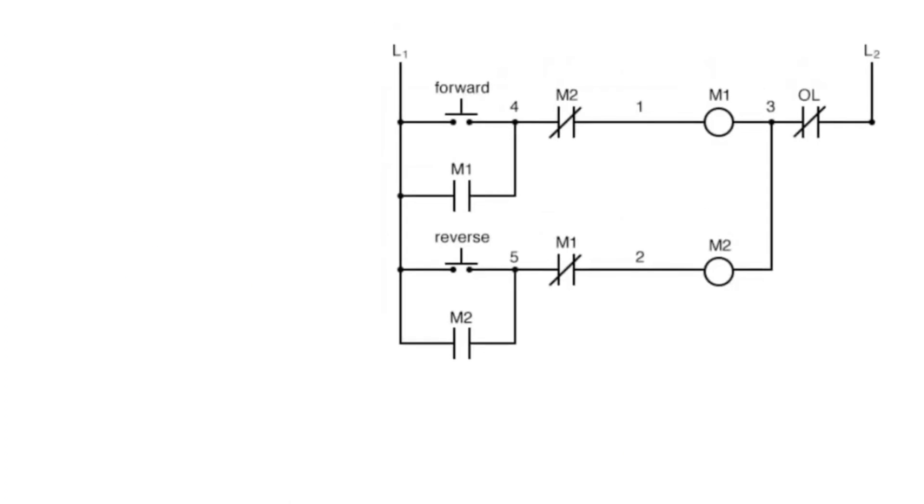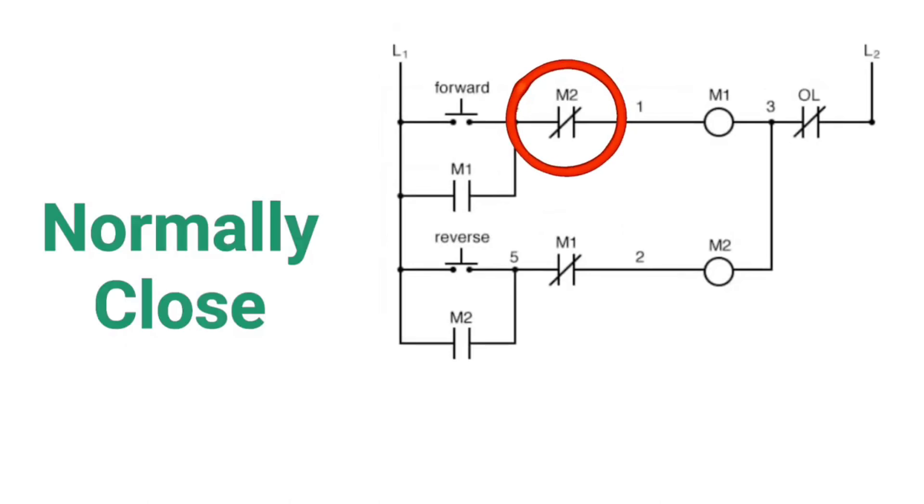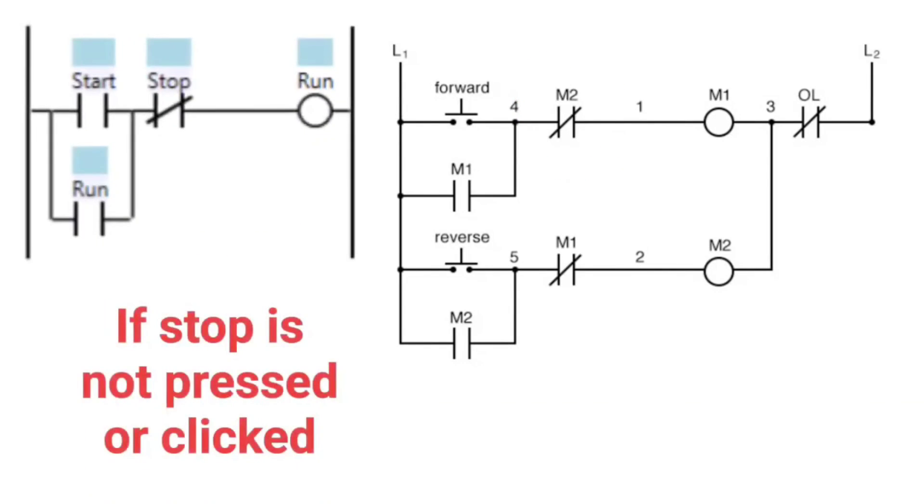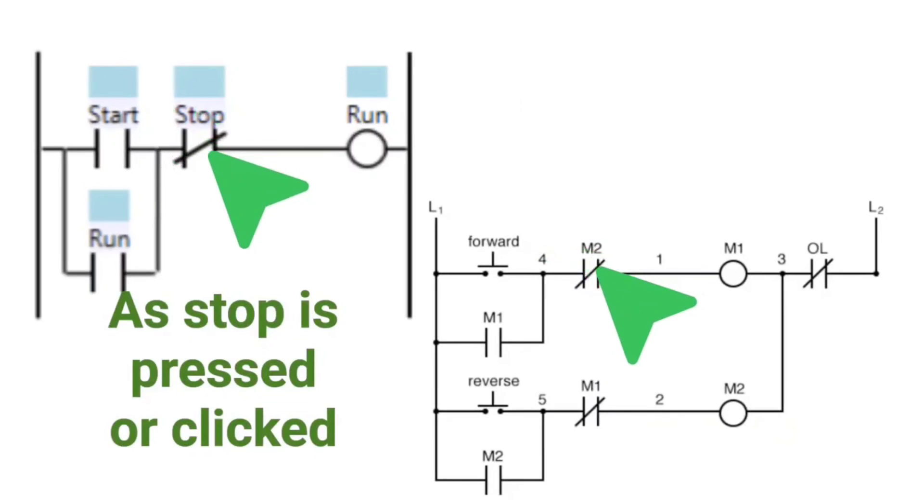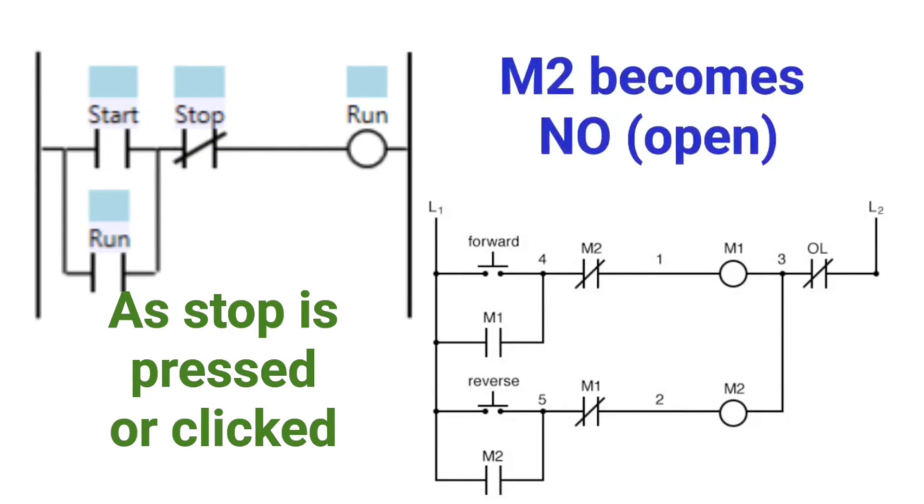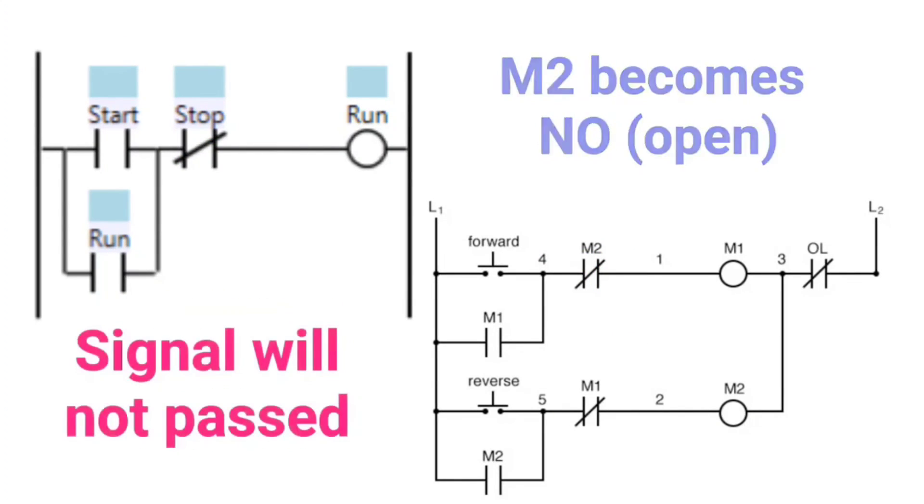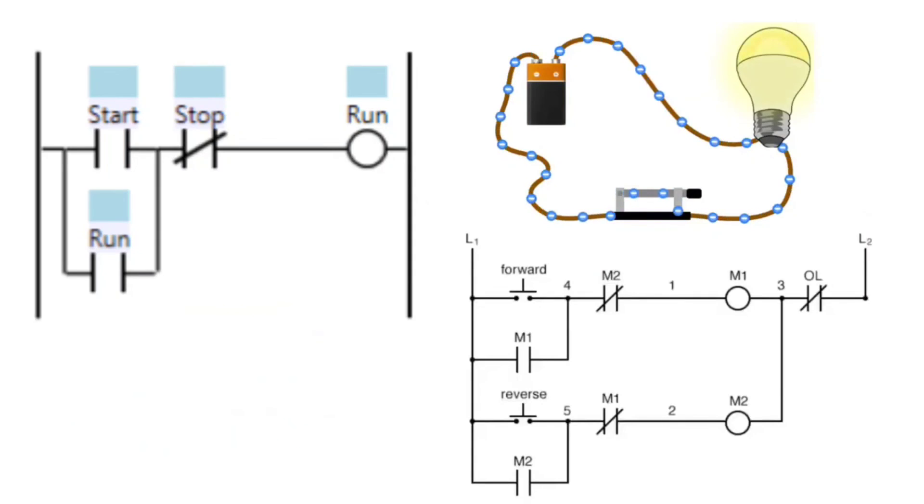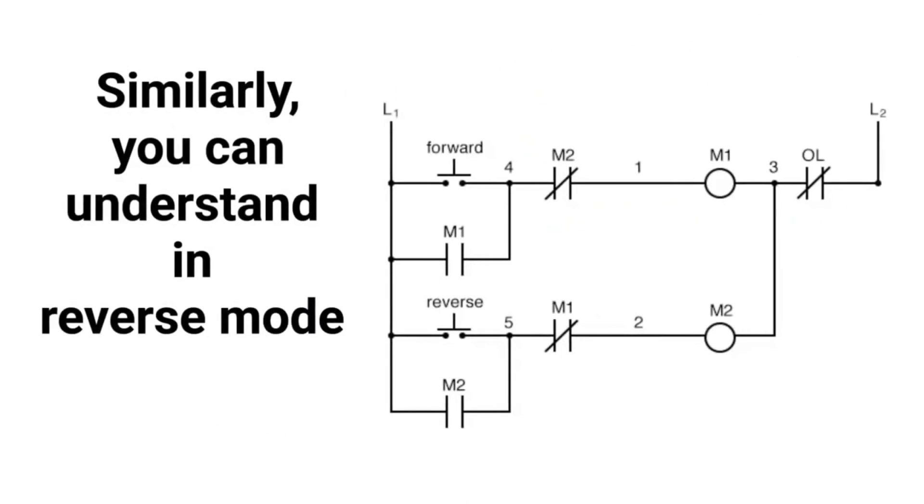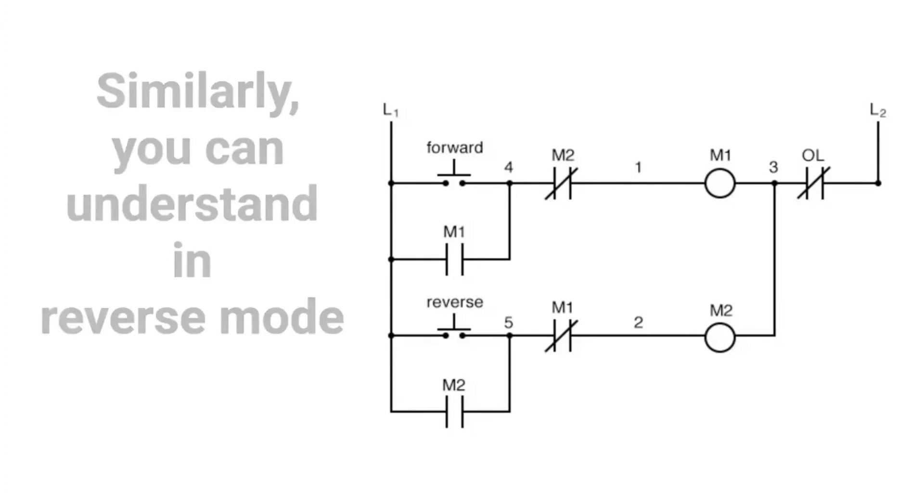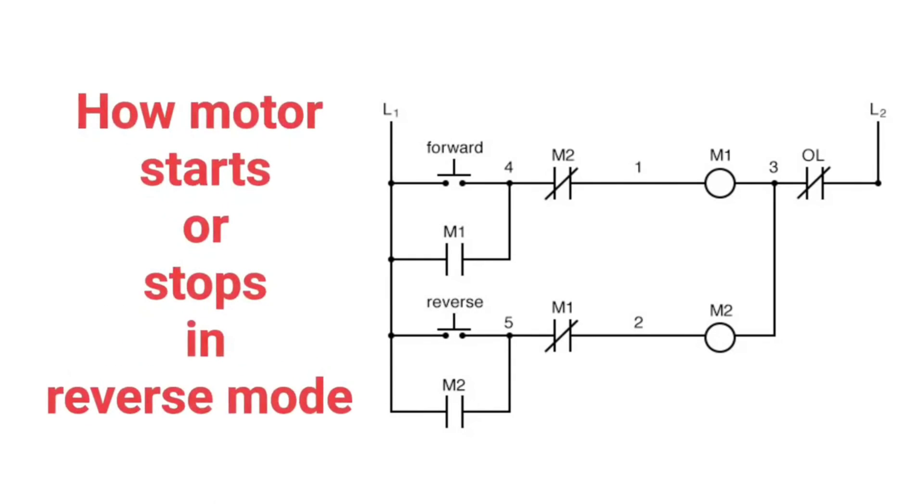Motor stop M2 is normally close. This means that if there is no stop pressed, it will pass the signal. As you click stop, M2 will be normally open and signal will not pass, due to which the circuit will open and the motor will stop. Similarly, you can understand in reverse mode how motor starts or stops in reverse mode.